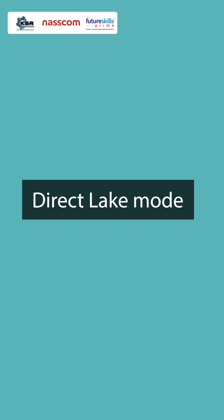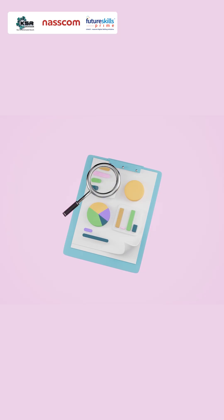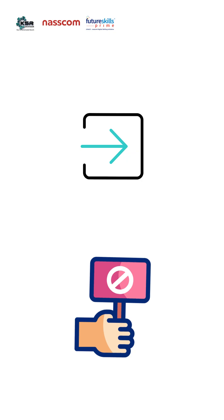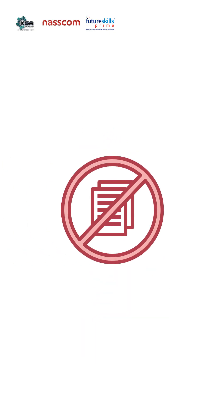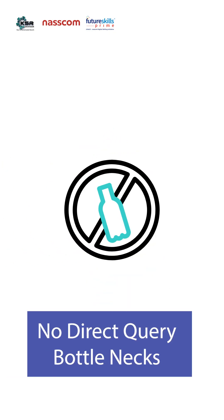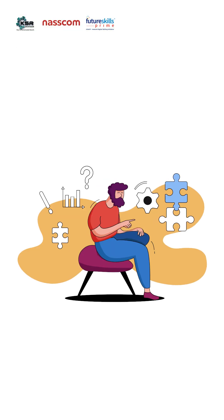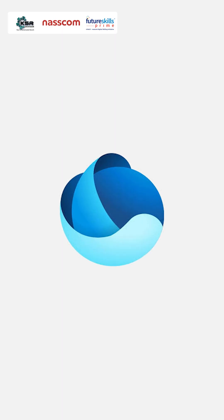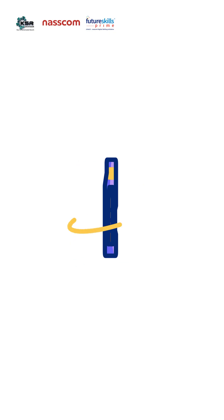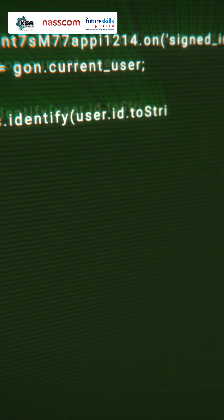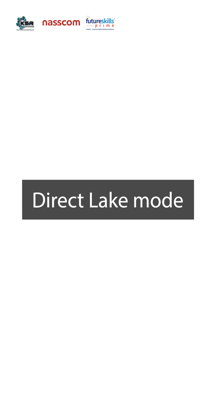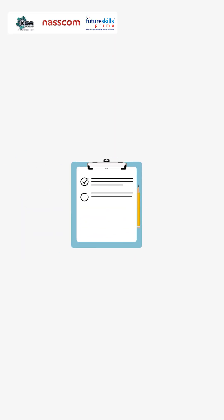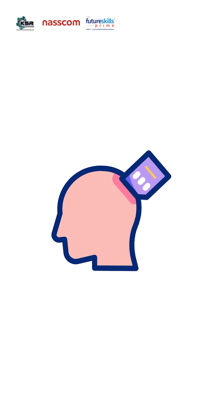Direct Lake mode changes that. It reads data directly from One Lake, straight from Delta tables — no import, no duplication, and no Direct Query bottlenecks. For example, imagine a 500 GB sales dataset in One Lake. Import mode copies it all into memory, whereas Direct Query queries the source every time. Direct Lake mode skips both steps. Your report queries the lake almost like the data is already in memory.